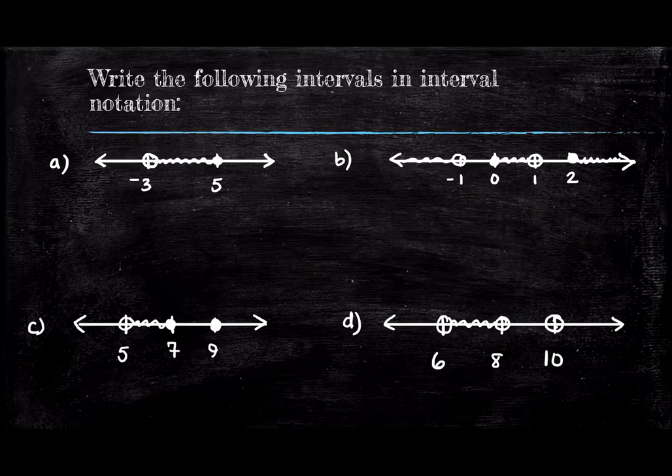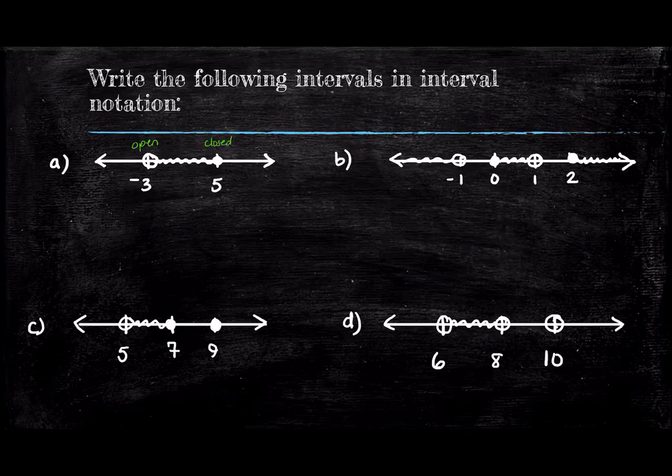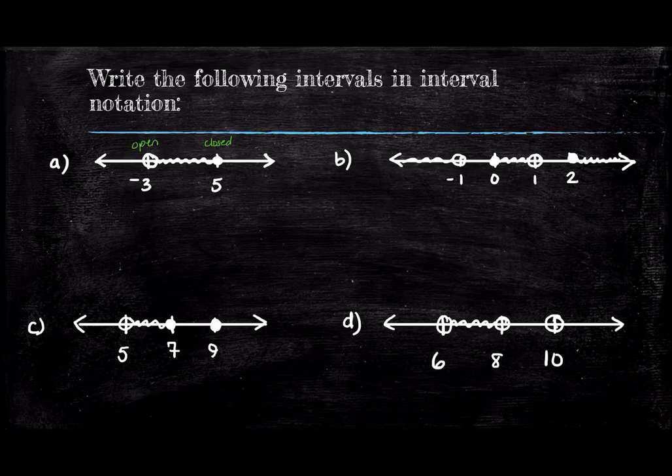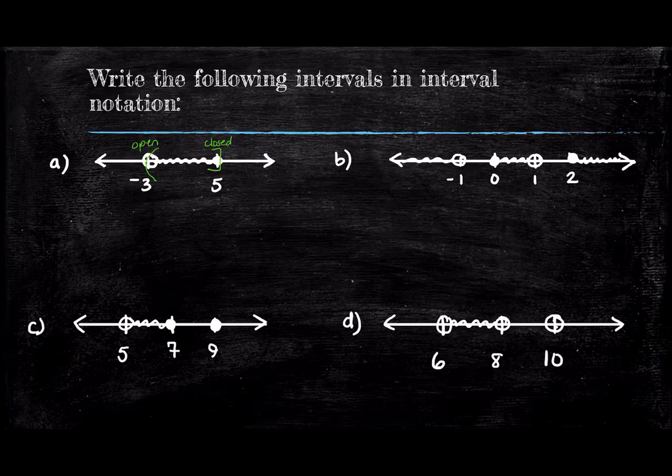We will write the following four intervals in interval notation. Starting with set A here, we see that the negative three is excluded because it is not shaded, and the five is included because it is shaded. This means we have parentheses around the negative three and a square bracket around the five. So our answer is parentheses negative three, comma, five, square bracket.